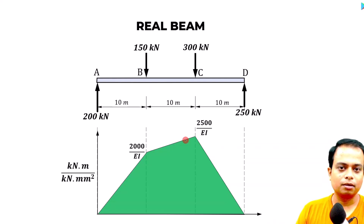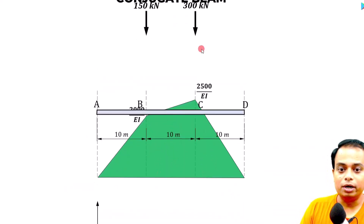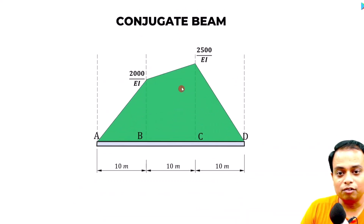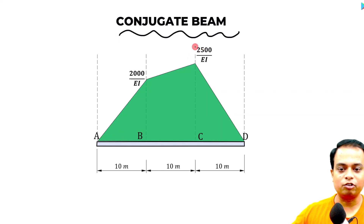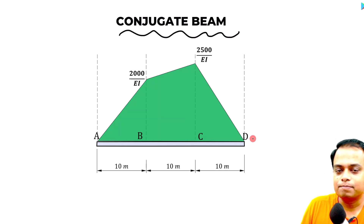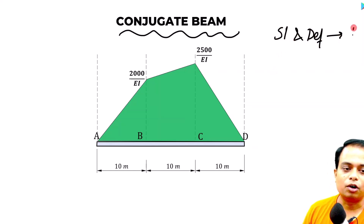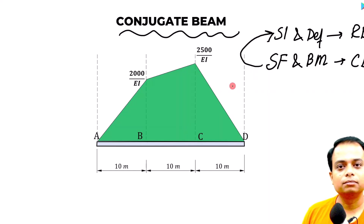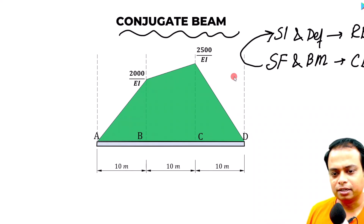We now transform the real beam into a conjugate beam by using the M/EI diagram as the load. The M/EI diagram of the real beam becomes the loading for the conjugate beam. We then repeat all calculations — finding reactions, shear forces, and bending moments at all four locations — which indirectly gives us the slopes and deflections for the real beam.